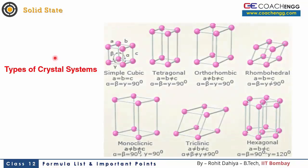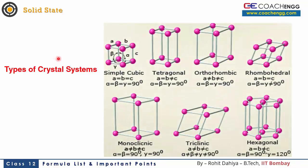So types of crystal systems are discussed. There are 7 types of crystal systems which are possible geometrically. In crystalline objects, there is a repeating pattern. This is the smallest repeating pattern that we are trying to analyze. This is a simple cube in which all sides are equal and each angle is 90 degrees.